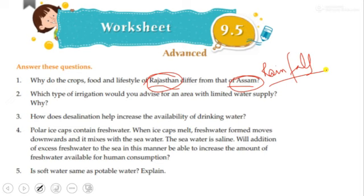How does desalination help increase the availability of drinking water? Through desalination, if we remove the saline content from water, it becomes fit for drinking. The reverse osmosis system installed in our homes works on the same principle — it converts saline or impure water into potable water. For the remaining questions, please try by yourself.